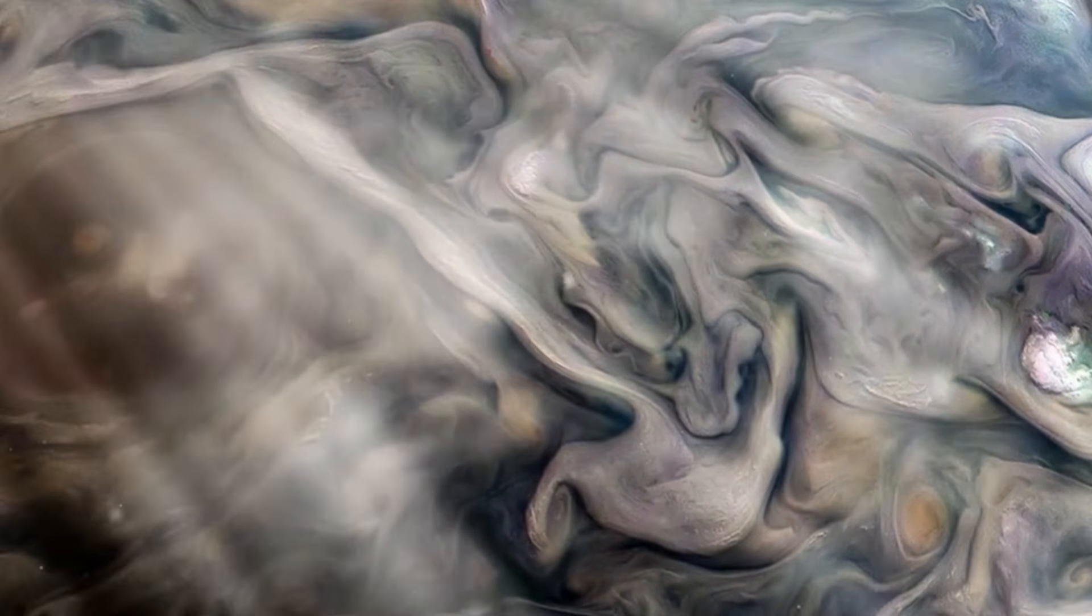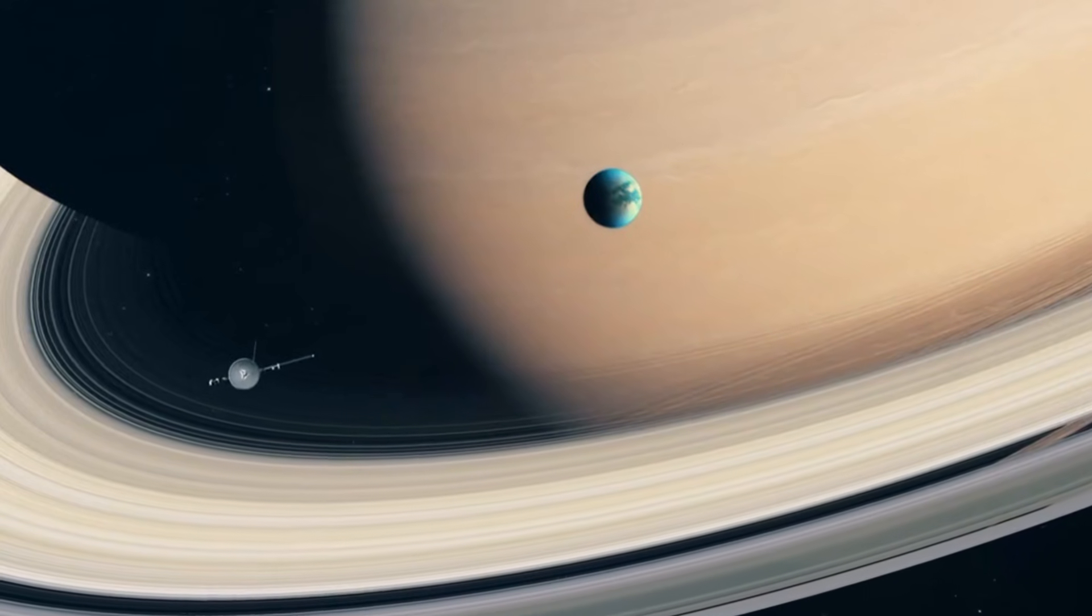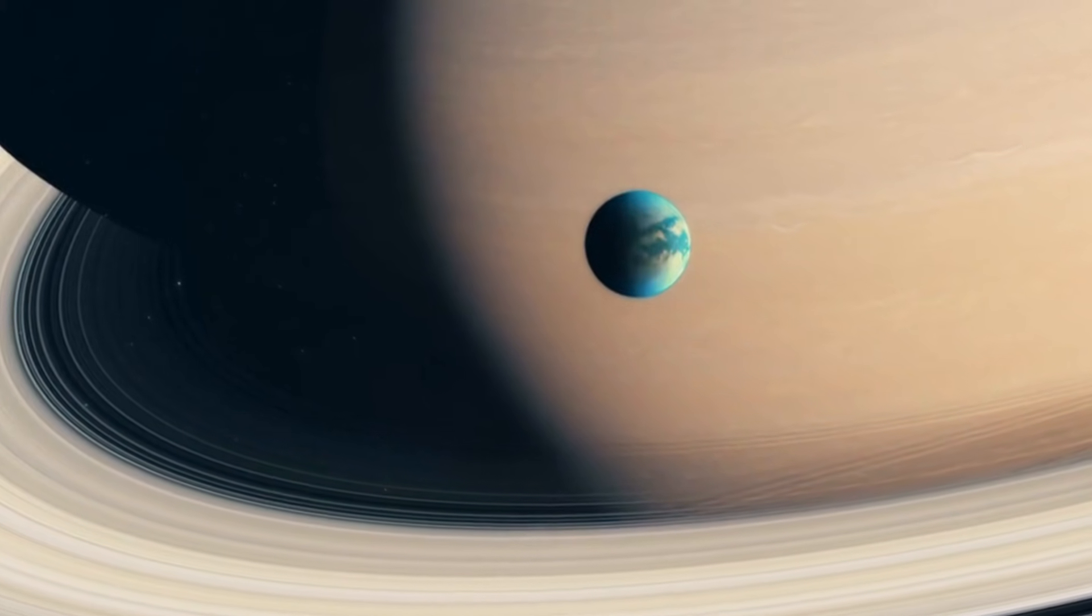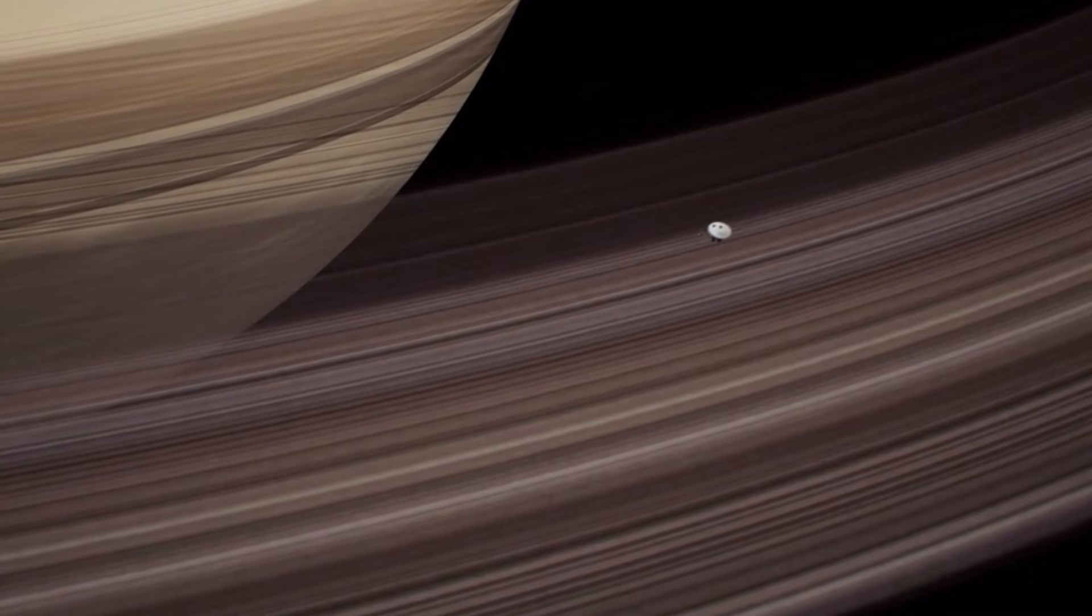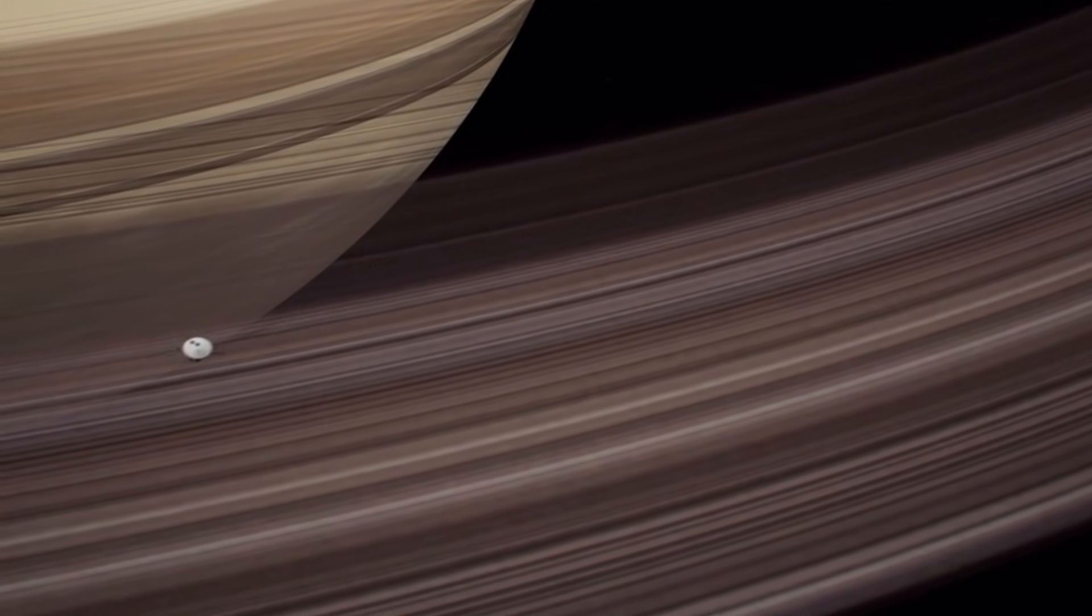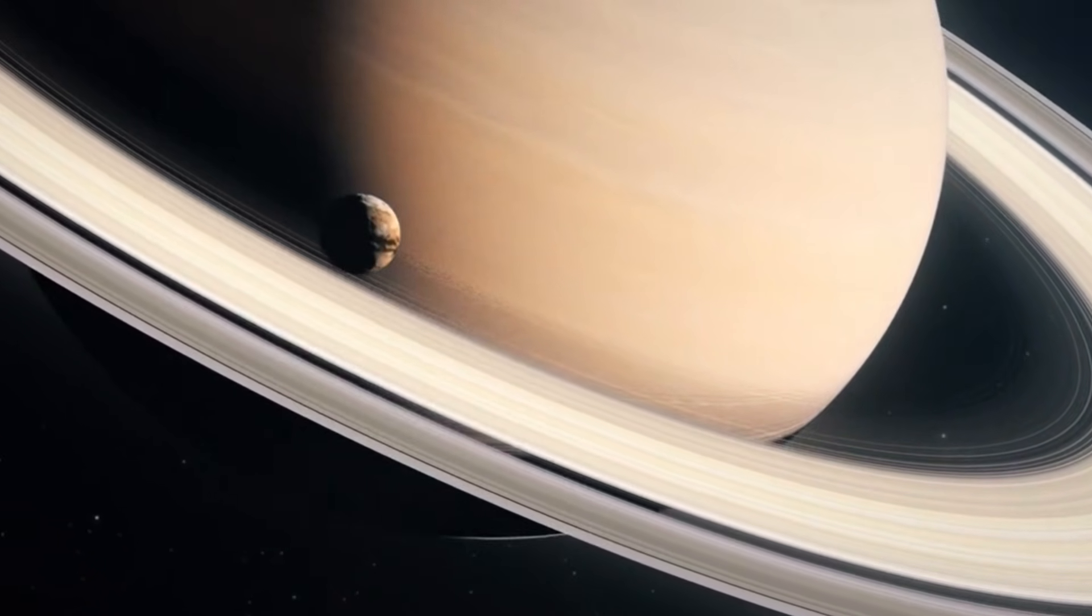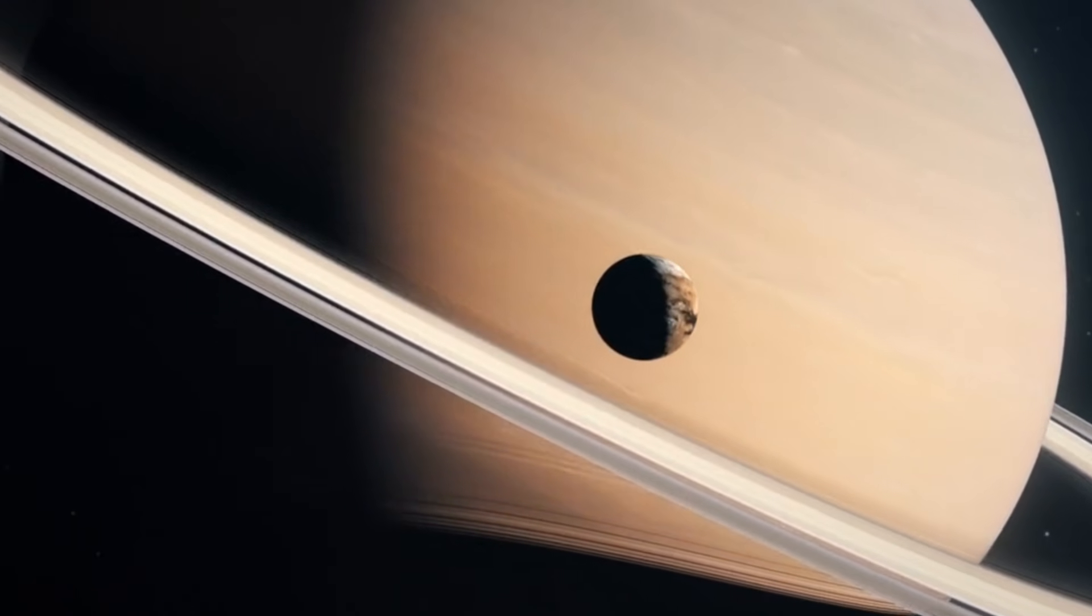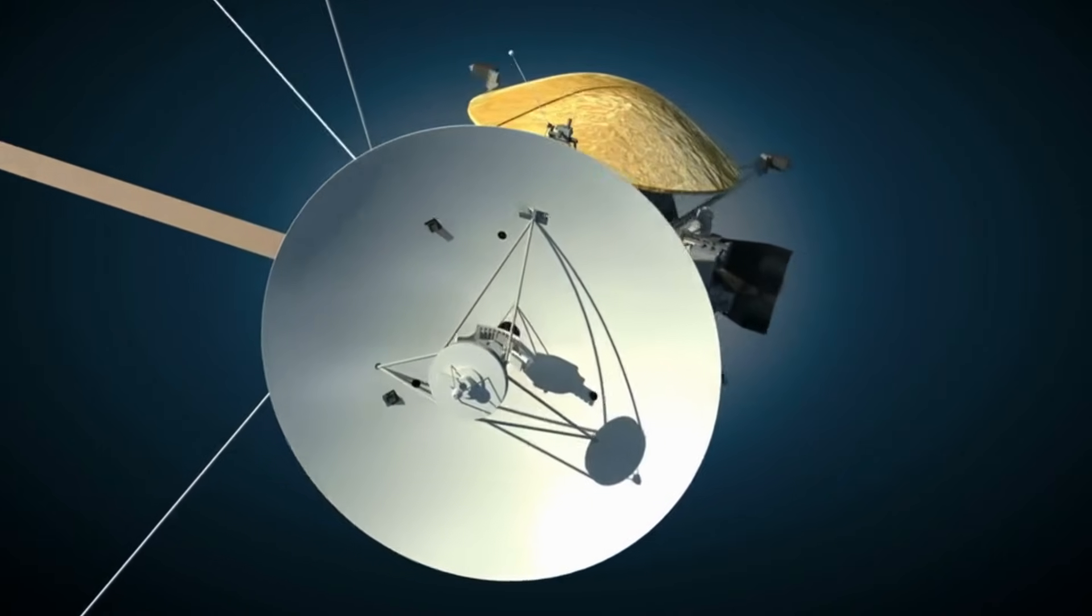The mission continued to Saturn in 1980, where Voyager 1 uncovered new moons and provided detailed observations of the planet's intricate ring system. The spacecraft revealed that Saturn's rings are composed of countless individual particles, ranging in size from tiny grains to large boulders. These discoveries expanded our understanding of planetary systems and their dynamics. Voyager 1 also studied Saturn's largest moon, Titan, capturing images that hinted at a thick atmosphere and a surface shrouded in mystery. These findings laid the groundwork for future missions, such as Cassini-Huygens, which would later explore Titan in greater detail.